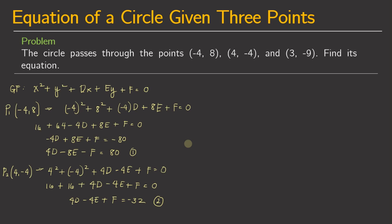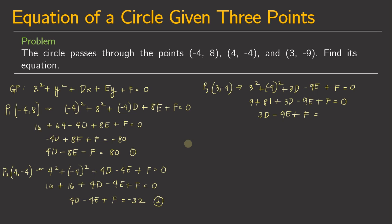Then for the third point, 3, negative 9, we have 3 squared plus negative 9 squared plus 3d minus 9e plus f equals 0. So 9 plus 81 plus 3d minus 9e plus f equals 0, giving us 3d minus 9e plus f equals negative 90. This is our equation 3.